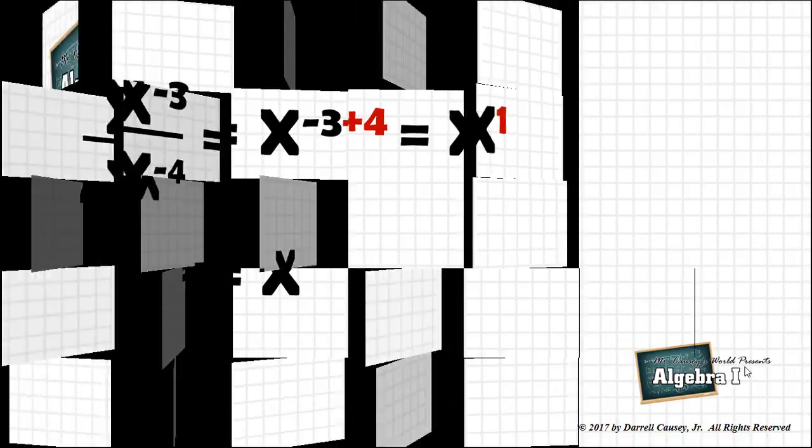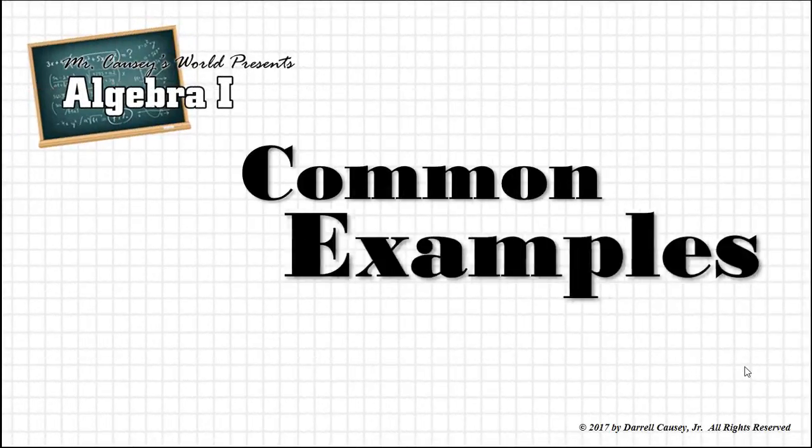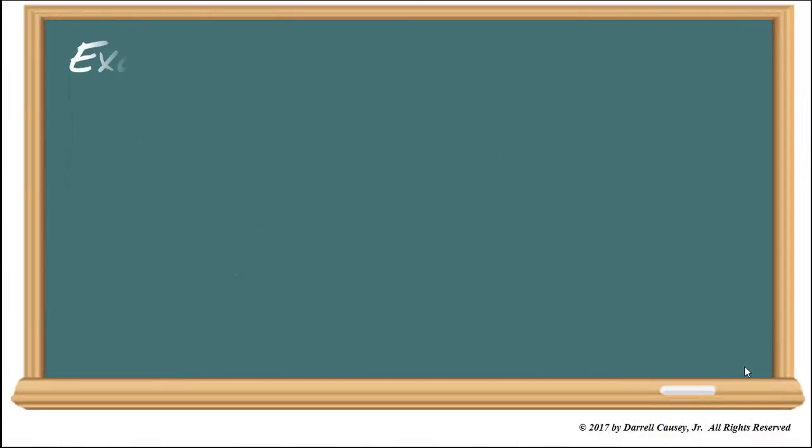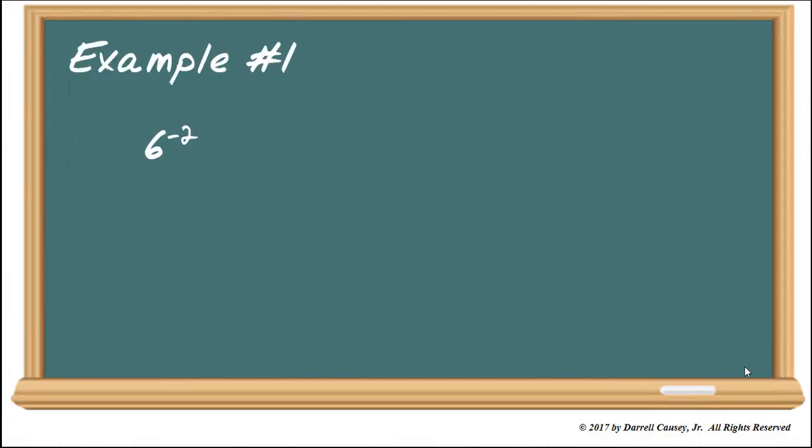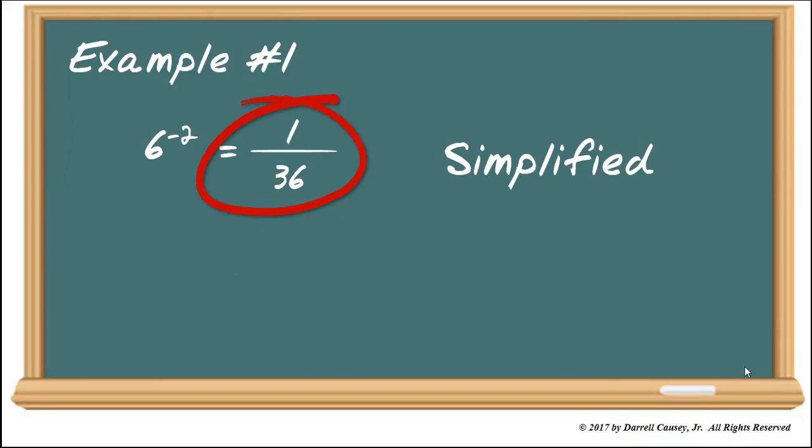Alright, let's look at some common examples. Example number one, six to the negative two. Well that can be rewritten as one over six squared. Simplify that to one over 36, and it is simplified. Now that's the goal in doing these is to simplify. And remember you can't have, or shouldn't have, negative exponents in an expression.